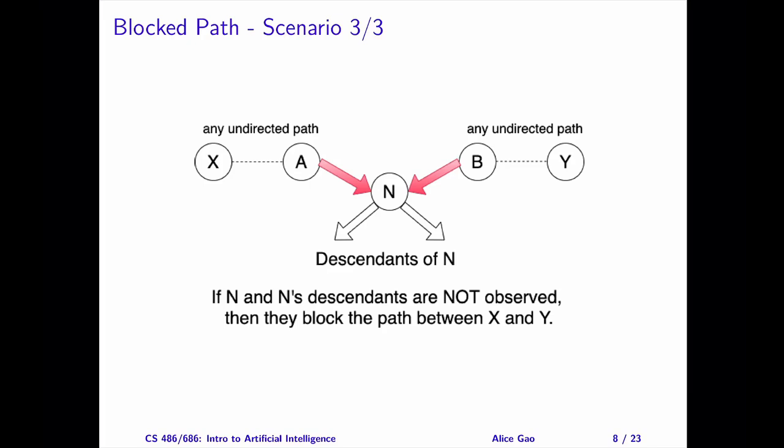Scenario three: The two arrows around N point toward N. A and B are both parents of N. If the arrows depict causal relationships, then A and B jointly cause N to happen. The descendants of N are also important in this scenario. The rule says that if we do not observe N and do not observe any of N's descendants, then the path is blocked.